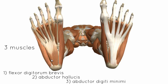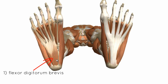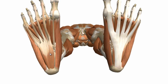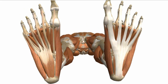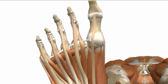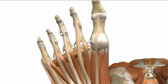Right in the middle, we've got the flexor digitorum brevis muscle. This originates on the medial process of the calcaneus and forms four tendons, which insert onto the sides of the middle phalanx of the lateral four digits.